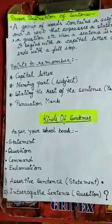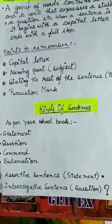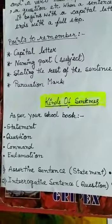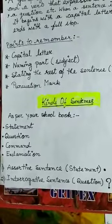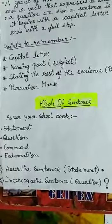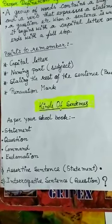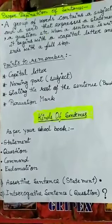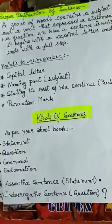Now there are different kinds of sentences. As per your book: statement, question, command, exclamation. A statement is called an assertive or declarative sentence. Second is the interrogative sentence — that is a question, and it ends with a question mark.